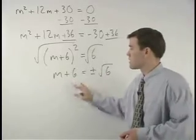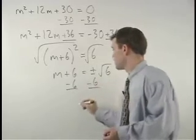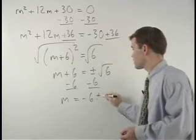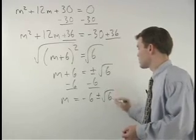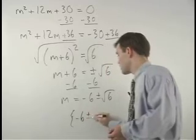To get m by itself, we subtract 6 from both sides, and we have m equals negative 6 plus or minus root 6. And let's write our answer in set notation.